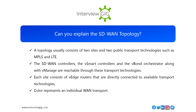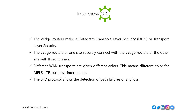Can you explain the SD-WAN topology? A topology usually consists of two sites and two public transport technologies such as MPLS and LTE. The SD-WAN controllers — the vSmart controllers and the vBond orchestrator along with vManage — are reachable through these transport technologies. Each site consists of vEdge routers directly connected to available transport technologies. Color represents an individual WAN transport. The vEdge routers make DTLS or TLS connections, and vEdge routers of one site securely connect with vEdge routers of the other site using IPsec tunnels. Different WAN transports are given different colors — for example, different colors for MPLS, LTE, business internet, etc. The BFD protocol allows detection of path failures or any loss.